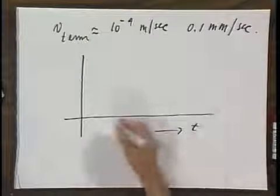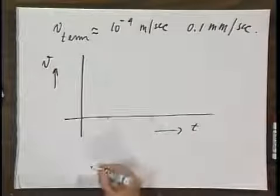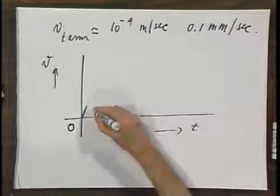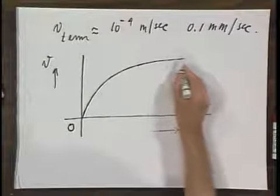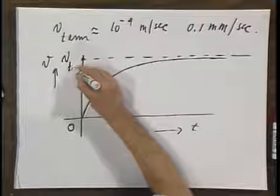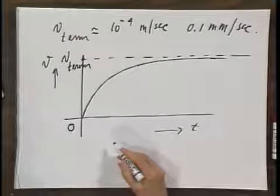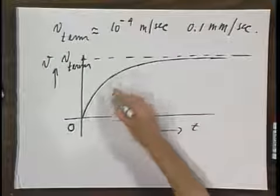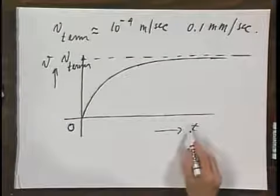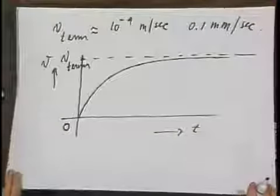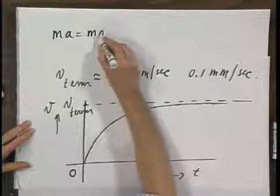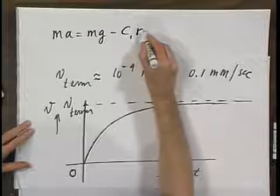How will it reach this terminal velocity? If I make a plot of the velocity of the oil drop as a function of time, very schematically it will curve upward and ultimately reach the terminal velocity. I want to discuss what is the representation of this curve — how does this speed change with time? In other words, I have to evaluate the equation: ma equals mg minus c1r times v.